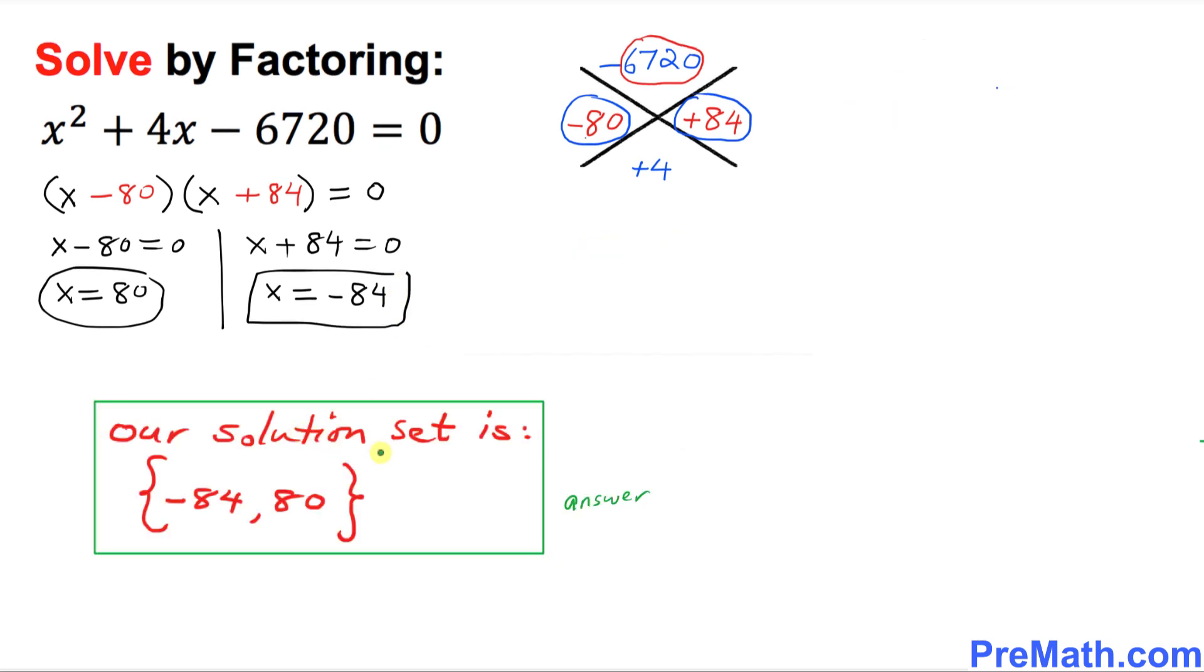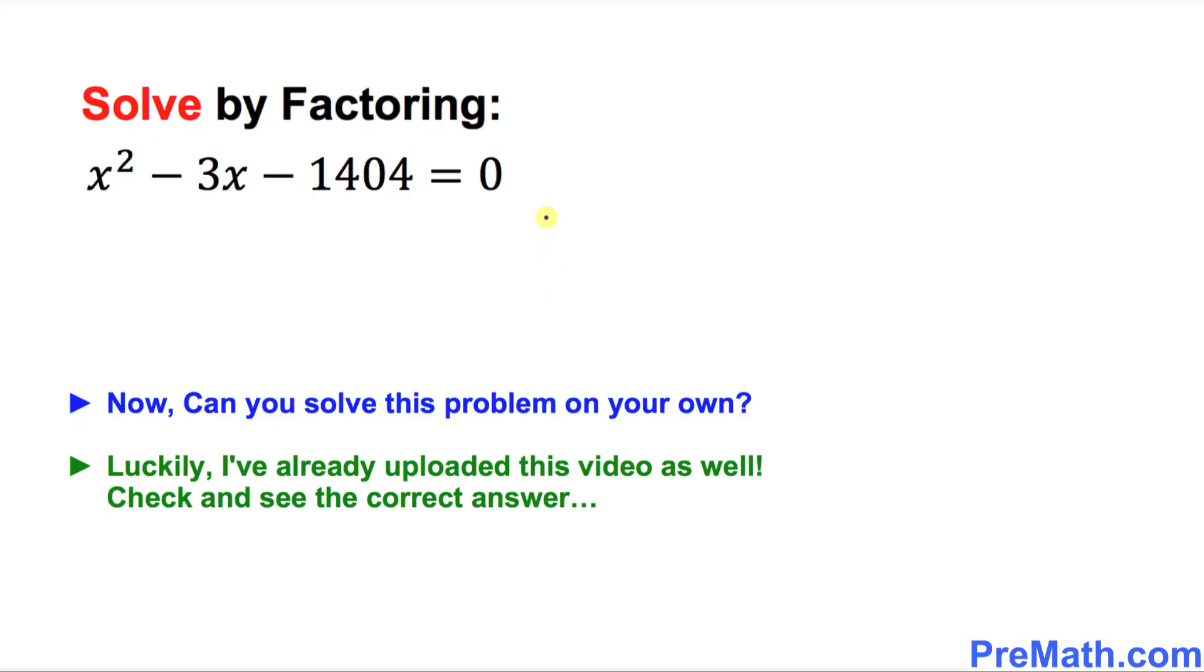Thus, our solution set is negative 84 comma 80. Here's your assignment. Can you do this on your own? You can pause the video. Luckily, I've already uploaded this video as well. Go ahead, check it out, and see the correct answer.